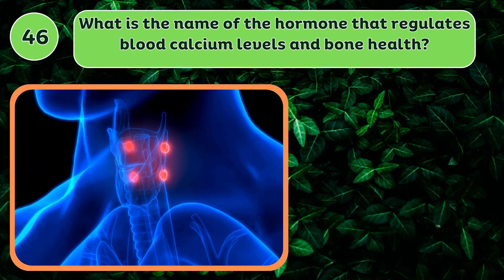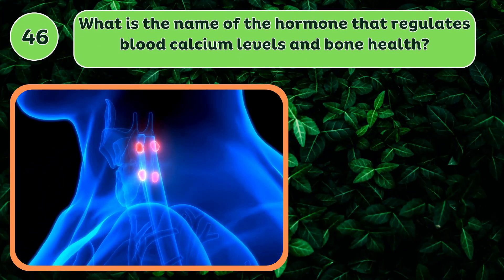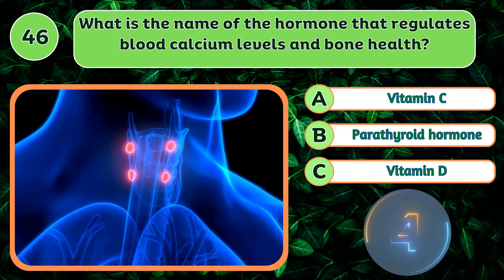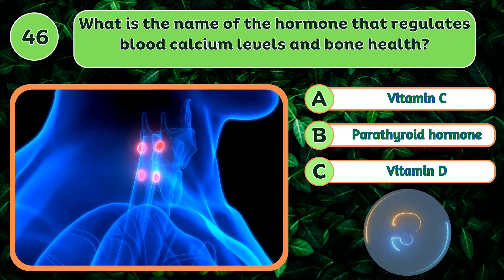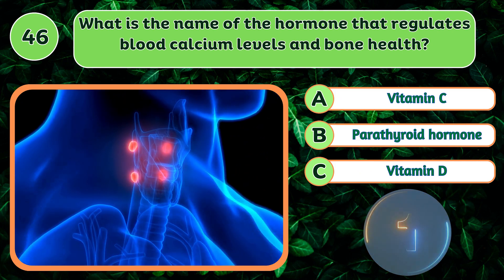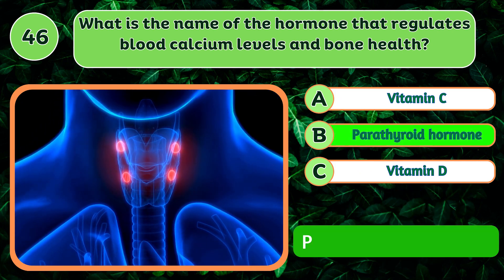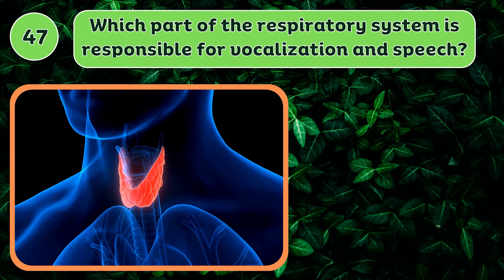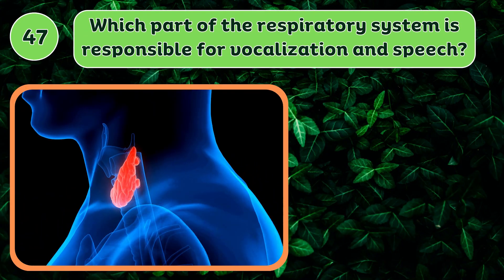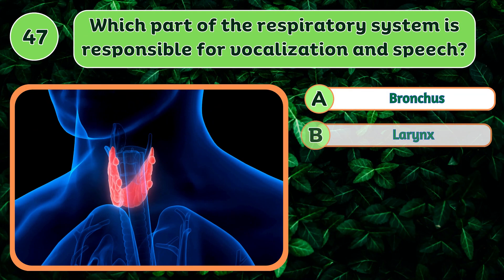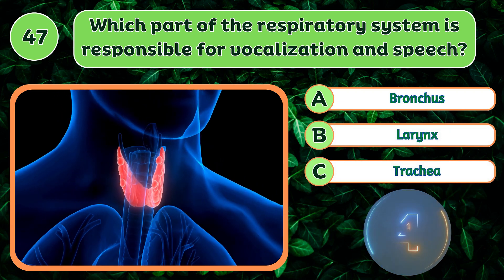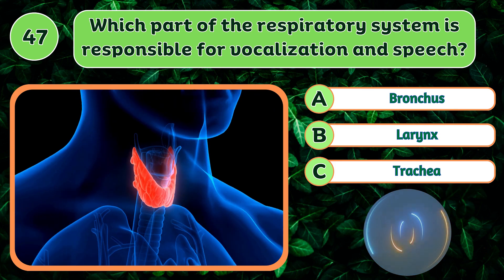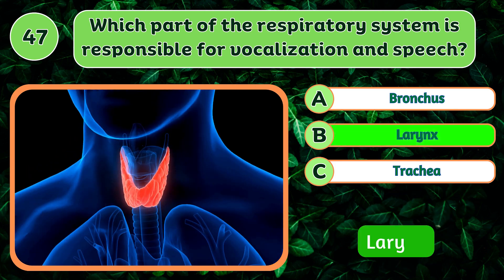What is the name of the hormone that regulates blood calcium levels and bone health? Parathyroid hormone. Which part of the respiratory system is responsible for vocalization and speech? Larynx.